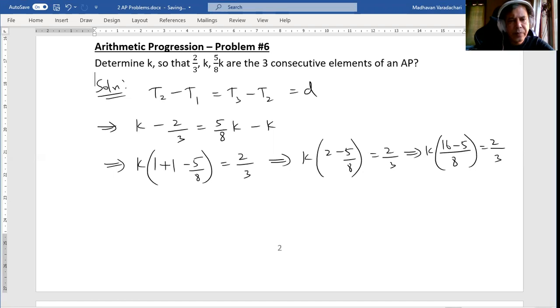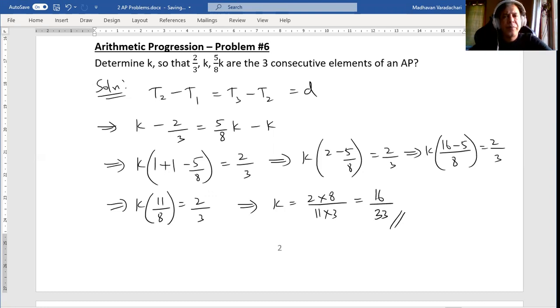Which means k times 11/8 equals 2/3. That means k equals 2 times 8 by 11, I'm just doing cross multiplication, 8 goes here, 11 comes here. So that gives you 16 by 13, that is the value of k. So that's the solution for this particular problem.